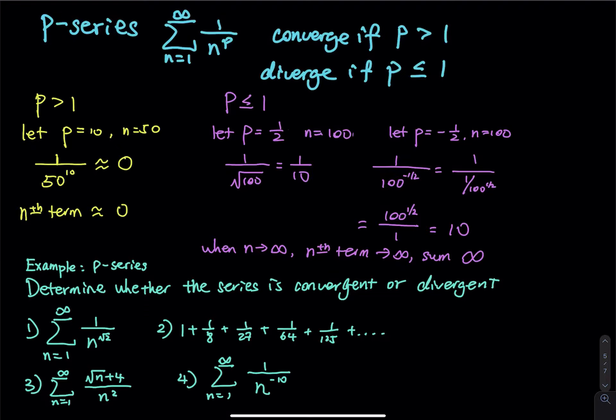Think about this: say you have 20 numbers in front of you in ascending order. You add them up one at a time — the first one plus the second one, the sum of the first two plus the third one, and so forth. By the time you reach the last couple numbers, they are really just zeros. So you are adding up zeros, which means the series must be convergent.